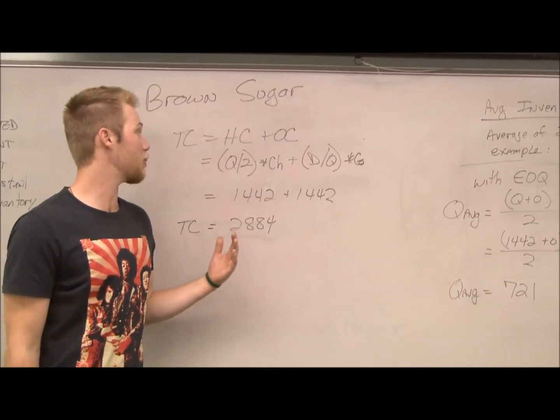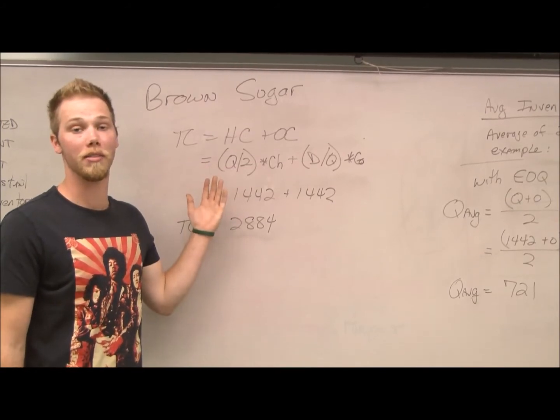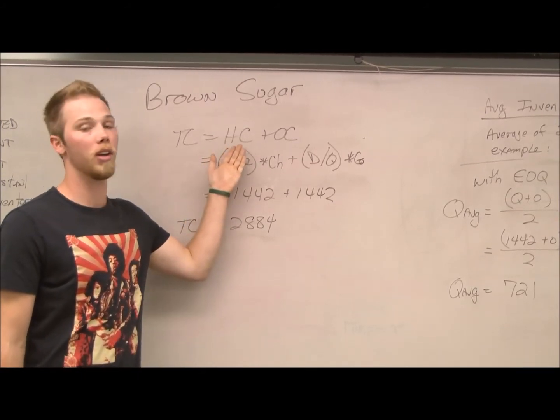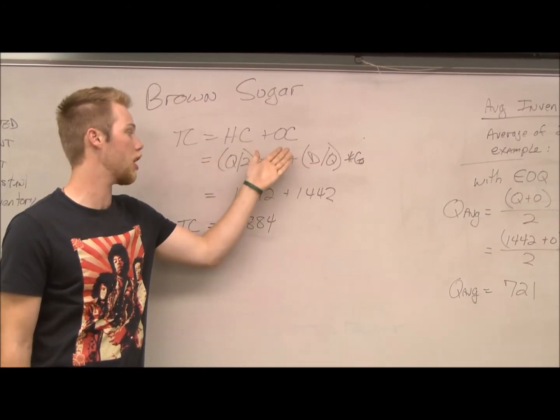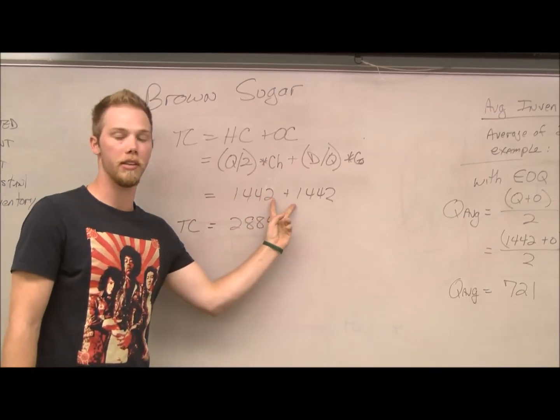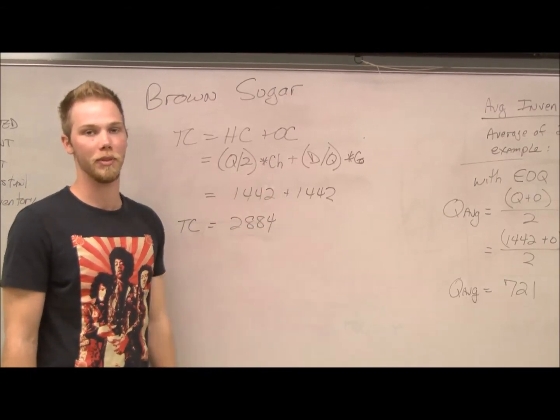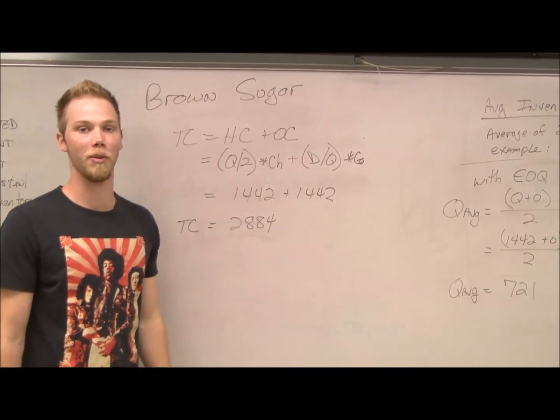Just as before, you solve for total costs the same exact way by adding holding costs and ordering costs, and that's why you see these two numbers as being the same.